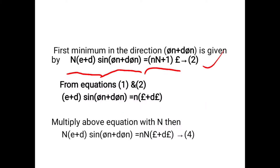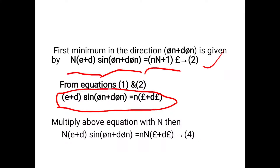We have (e + d) sin(theta_n + d_theta_n) = n * (lambda + d_lambda). Multiplying the above equation by capital N on both sides, the equation becomes: N * (e + d) sin(theta_n + d_theta_n) = n * N * (lambda + d_lambda) ... equation 4, where small n is the order of spectra and capital N is the number of parallel slits.